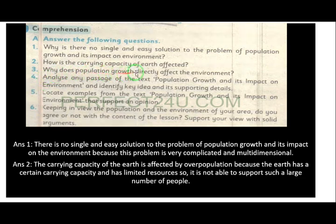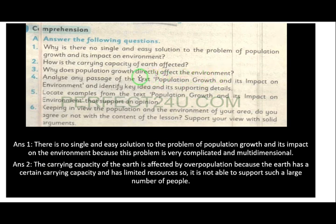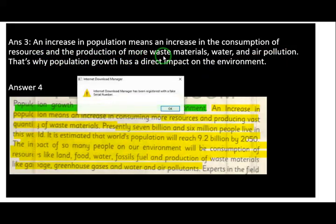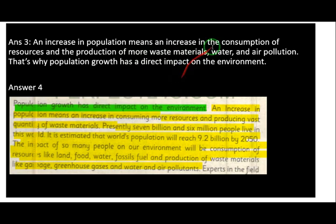Third question: Why does population growth directly affect the environment? Pa population ki ji iza fa ki ghi, no bara hiraast mahol wa sara matasir ki ghi — direct asar walide. An increase in population means an increase in the consumption of resources and the production of more waste materials, water and air pollution. That is why population growth has a direct impact on environment.